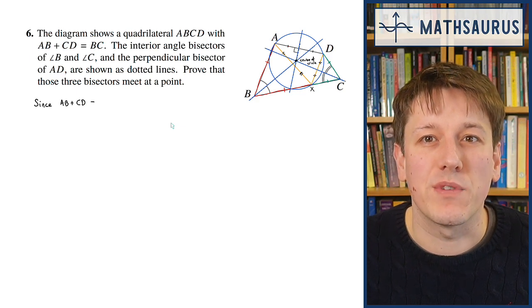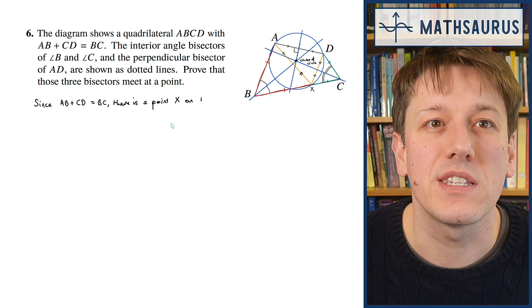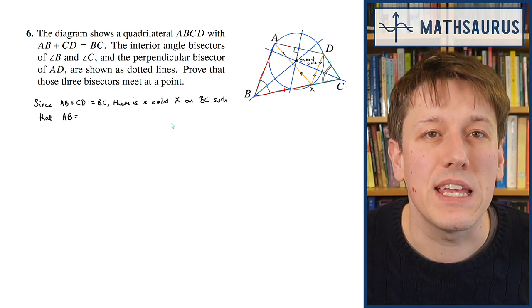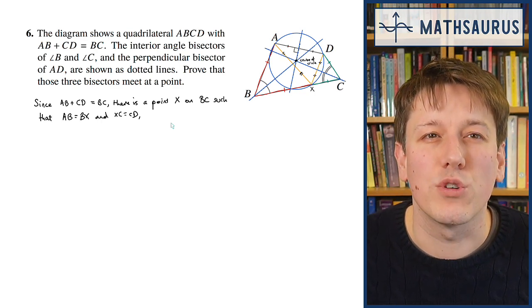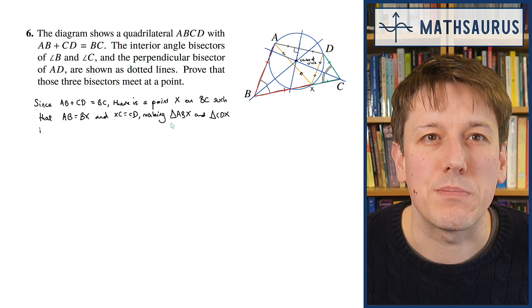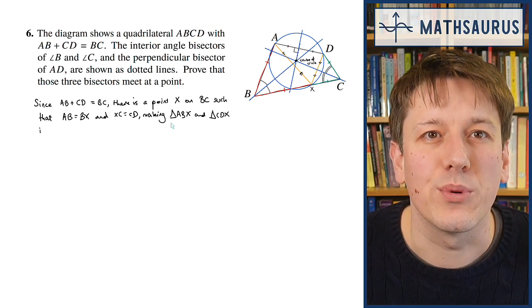We'll go through everything we've done and make sure we've got it down on the page solidly. Since AB plus CD equals BC, we know there must be this point X on BC such that AB equals BX and XC equals CD.